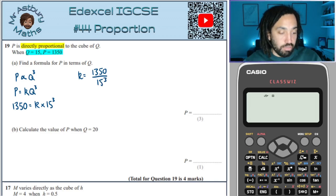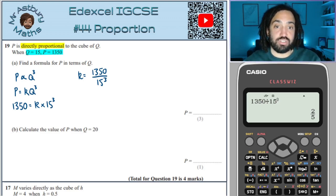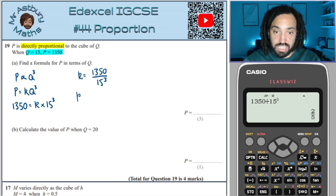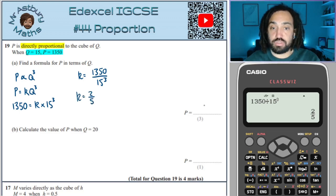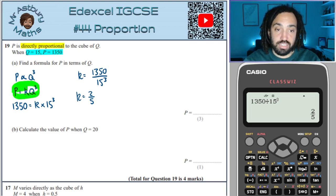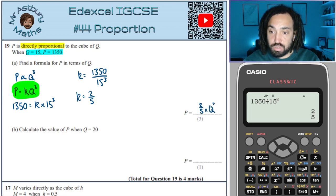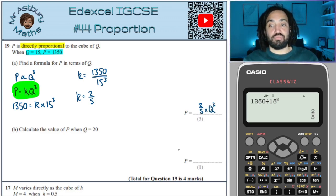To the calculator: 1350 divided by 15 cubed gives 2 fifths. So K = 2/5 or 0.4, whichever you prefer. We put K back into the original equation, giving P = (2/5) × Q cubed.